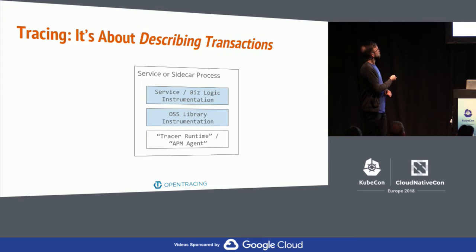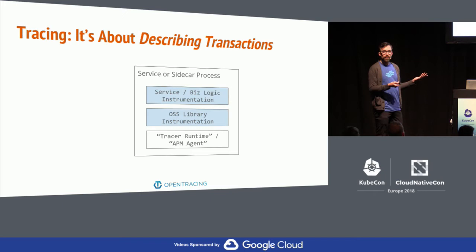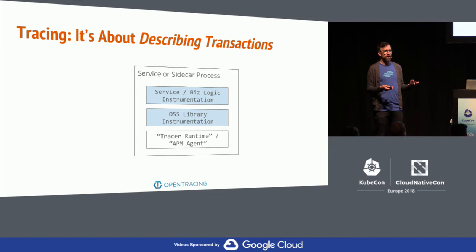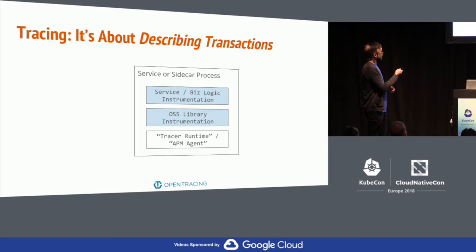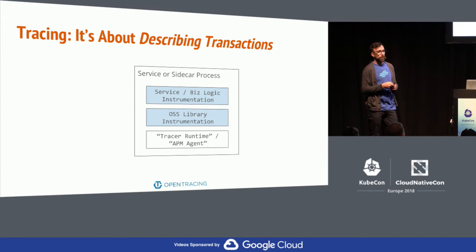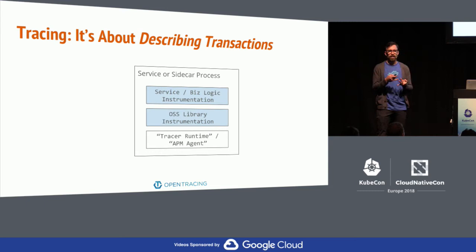Last but not least, tracing is the act of describing a transaction — instrumenting it. As someone who owns an application, you own huge amounts of code you didn't write: code from GitHub, NPM, or GoDeps. You deploy this code and need to understand how it works. From the standpoint of a developer writing code, this is the part of tracing that is presently the most painful. It's not the same as federating, recording, or analyzing transactions — these are the four tracings.